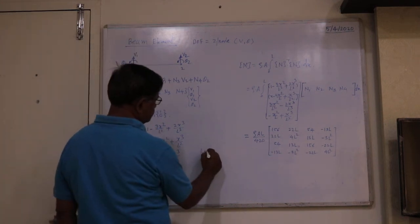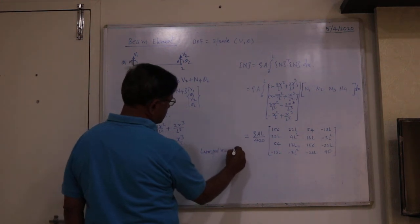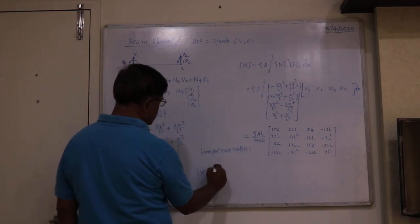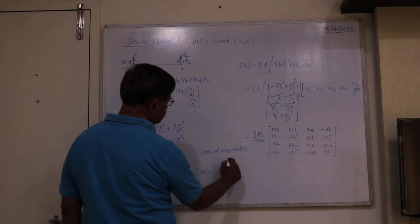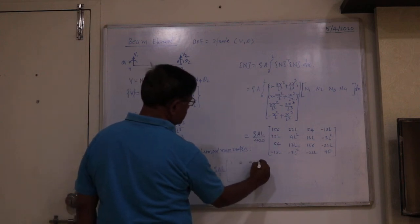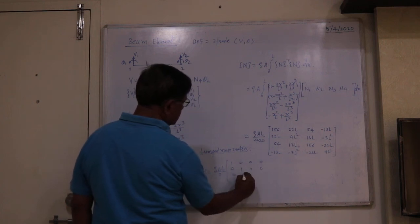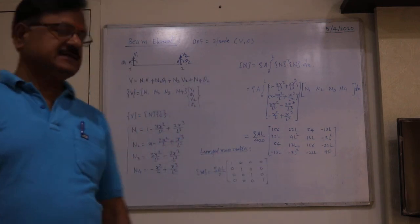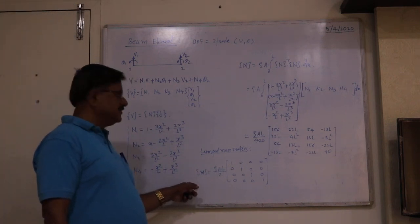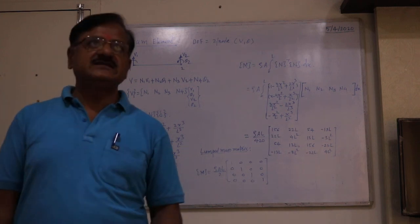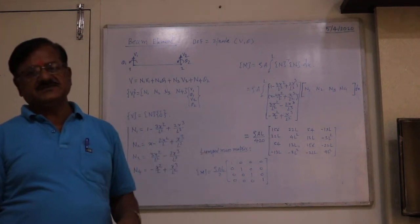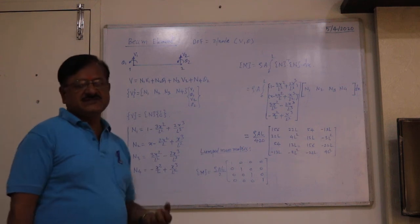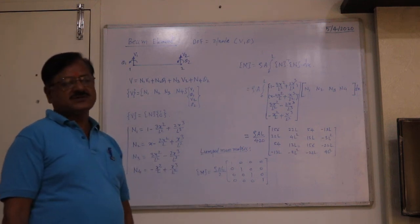The lumped mass matrix for the beam element is a diagonal 4×4 matrix: M = ρAL/2 times the identity matrix [1,0,0,0; 0,1,0,0; 0,0,1,0; 0,0,0,1]. Finding the lumped mass matrix is very easy, but the consistent mass matrix gives more accurate results. From a simplicity standpoint, the lumped mass matrix can be used to solve problems.